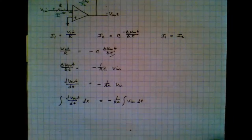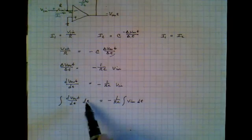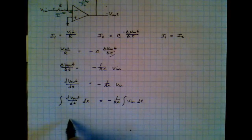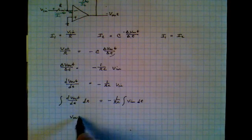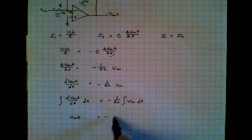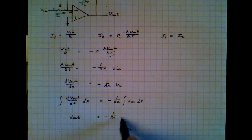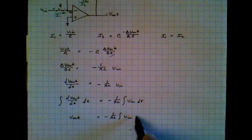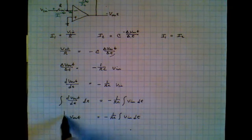From here, we can simplify this enormously. Notice the dTs cancel. The integral of dVout, of course, is Vout. Vout is equal to minus 1 over RC integral of Vin dT. And there it is.